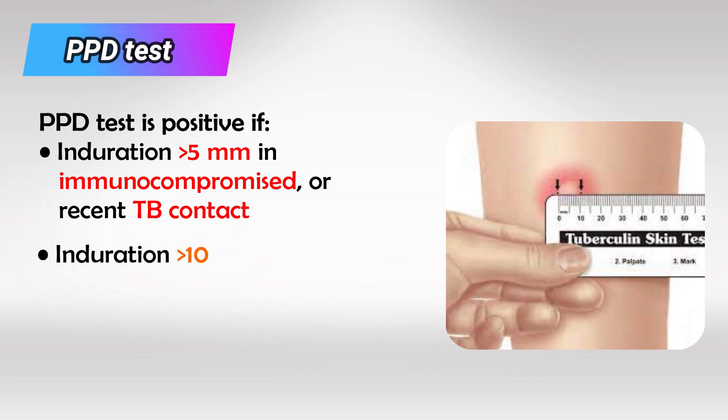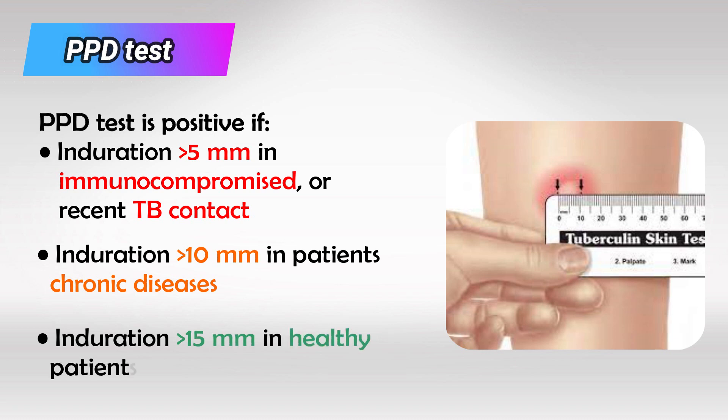We can also confirm TB if the induration was more than 10 mm in a patient susceptible to TB, such as homeless patients, prisoners, immigrants, leukemic patients, and alcoholic patients, or if a patient is completely healthy but the induration is more than 50 mm.